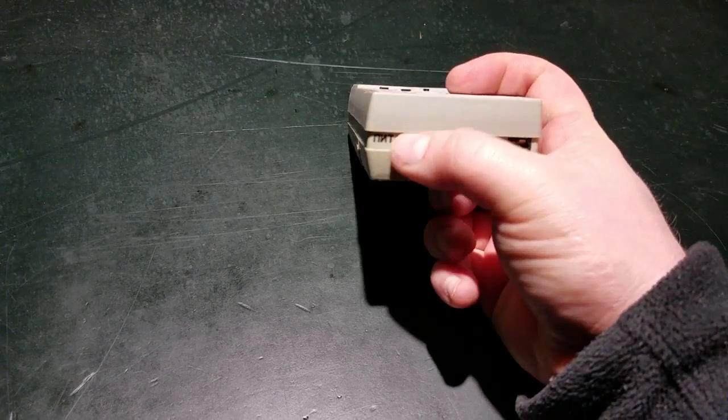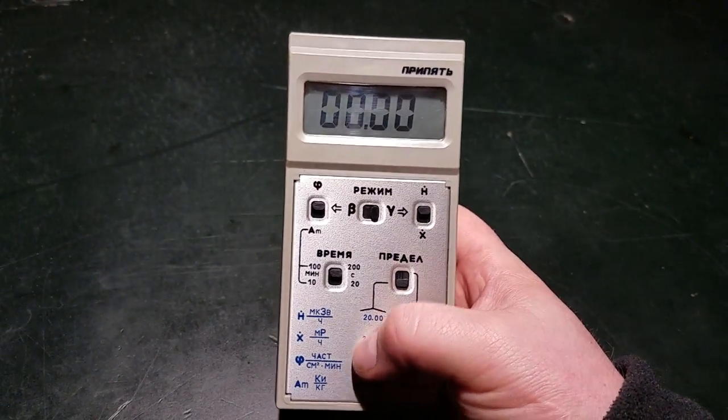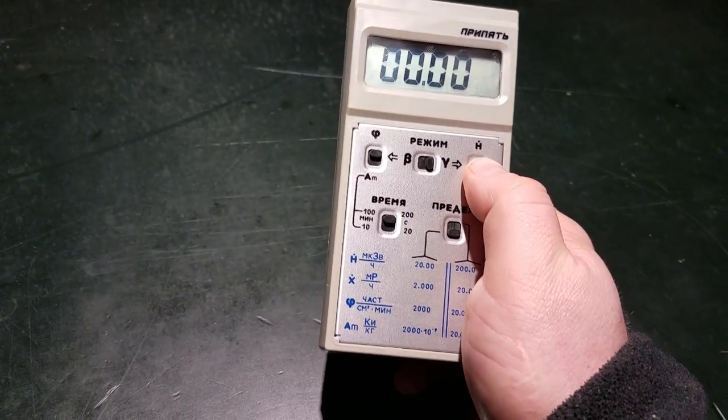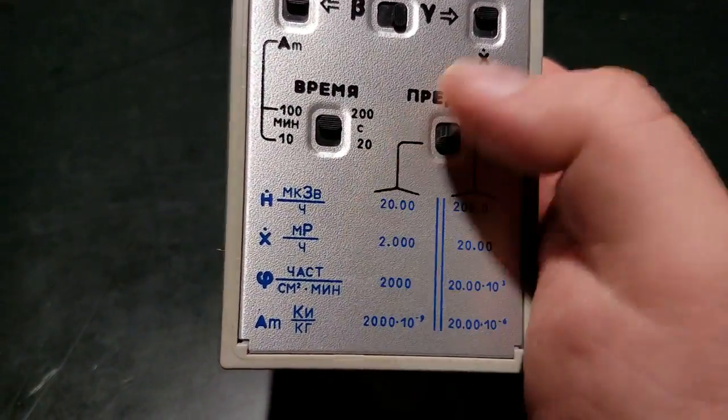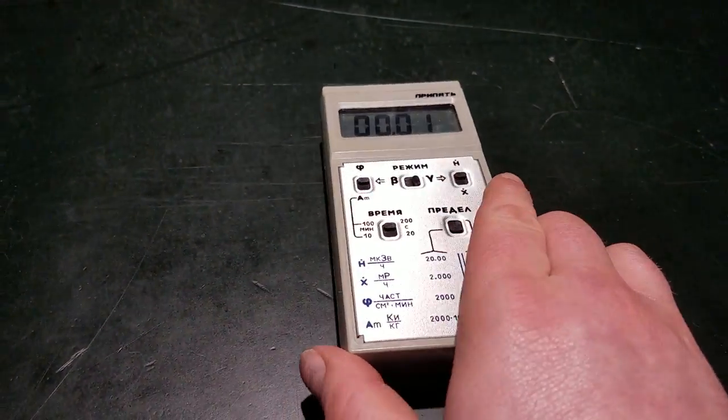Anyway, enough of that. Let's fire this guy up. You'll have to excuse me because I'm recording one-handed. So we're in gamma and we're looking for microsieverts per hour. You can see we've just got one. I'm gonna set this guy down and grab a sample.